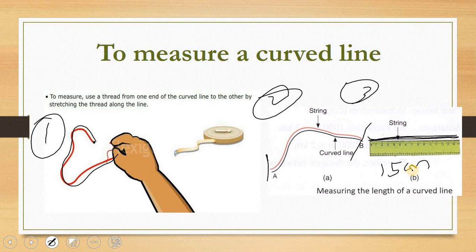When you have a curved line — bila ada garisan yang tidak lurus — ambil tali, potong tali tu, letak atas pembaris ataupun measuring tab, pita pengukur. Then you're going to look at the measurement — 5 cm, 2 cm, ataupun 10 cm, 15 cm.